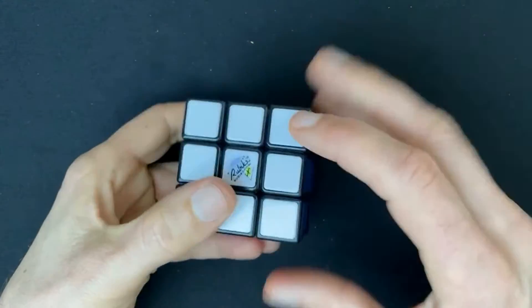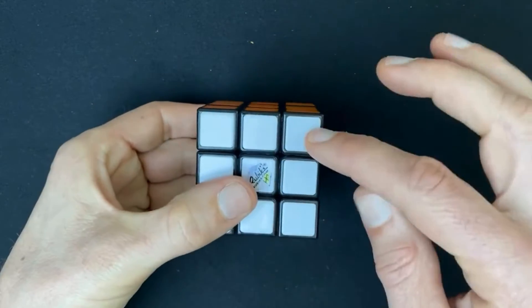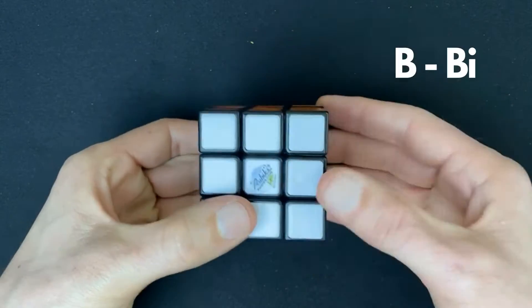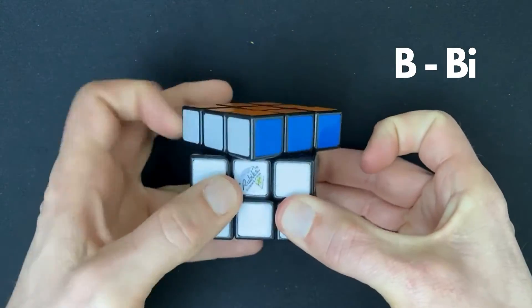So the back side of the cube. So this was the front side. Then this is the back side of the cube. So the back side of the cube is indicated with a B, from back.